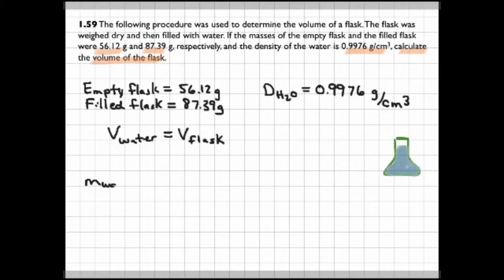So we can get the mass of the water by taking the mass of the filled flask minus the mass of the empty flask, and that's equal to 31.27 grams. So we've basically subtracted out the mass of the flask, leaving us with the mass of the water.